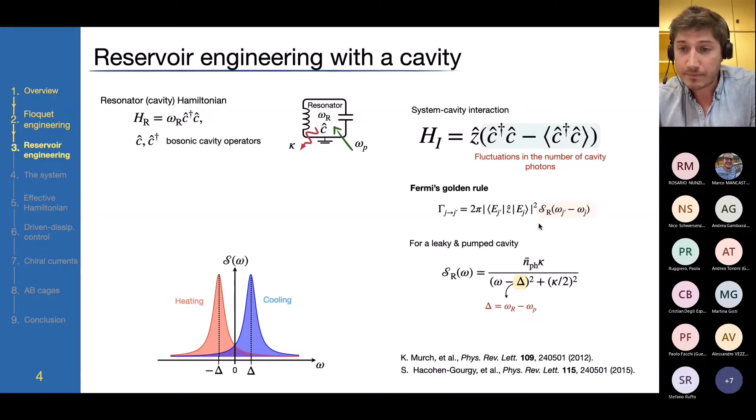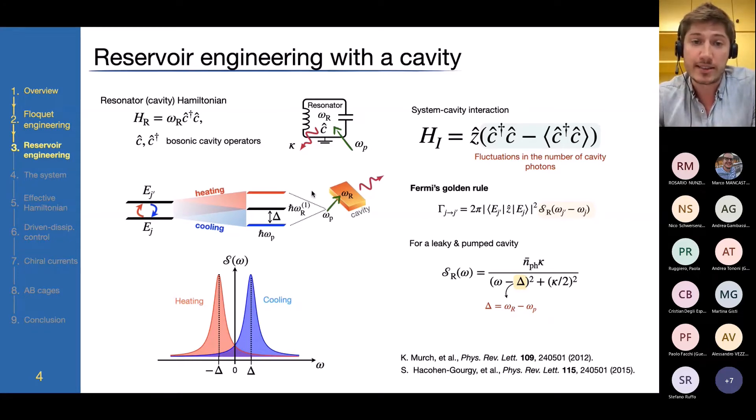Then one can use Fermi's golden rule to predict what would be the transition probability between two eigenstates of our system. The main ingredient here is the spectral density of these fluctuations in the number of photons. The point here is that when one at the same time pumps the cavity and lets it leak photons with a high rate, this spectral density will have a specific form that depends on the detuning, so on the difference between the pump frequency and the resonance frequency of the cavity. This spectral density, which has a Lorentzian shape, will peak either at positive energies or at negative energies depending on whether the pump frequency will be larger or smaller than the resonance frequency.